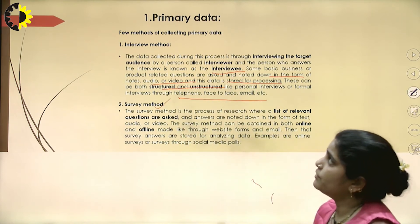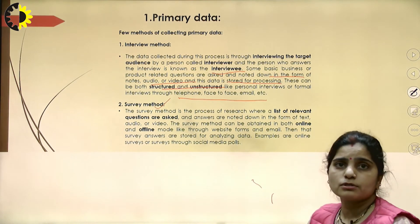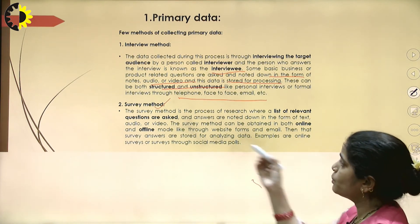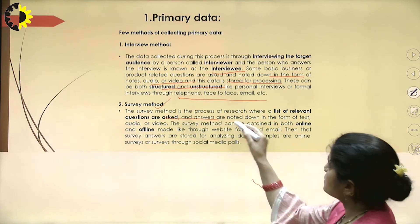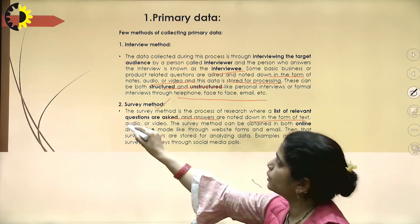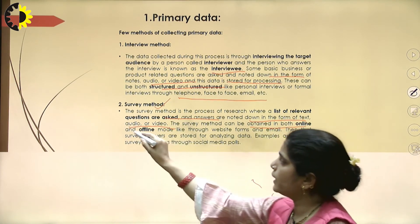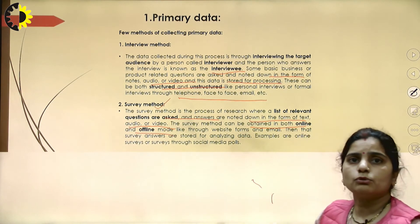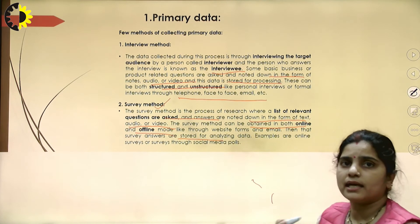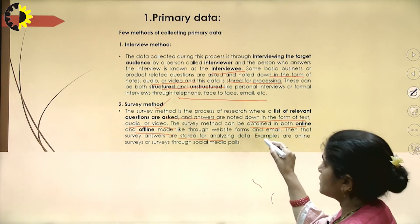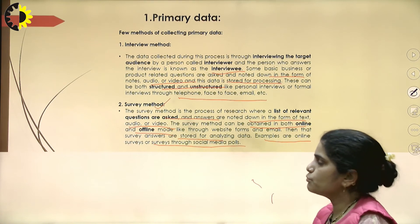The next method by which we can collect primary data is the survey method. It is the process of research where a list of relevant questions are asked and answers are noted in the form of textual, audio, or video format. This survey method can be conducted in both online and offline modes, such as through website forms and emails. The survey answers are stored for further data analysis. Examples include online surveys and social media posts.